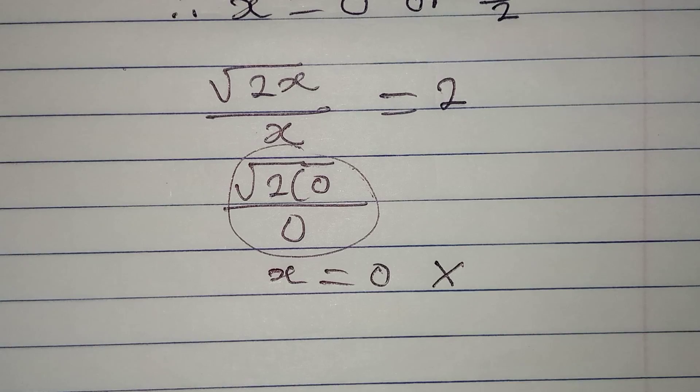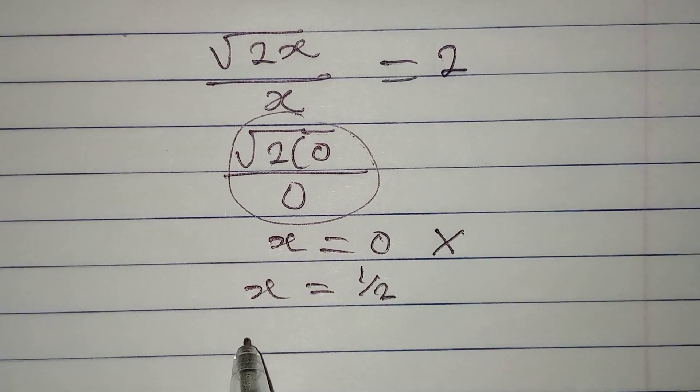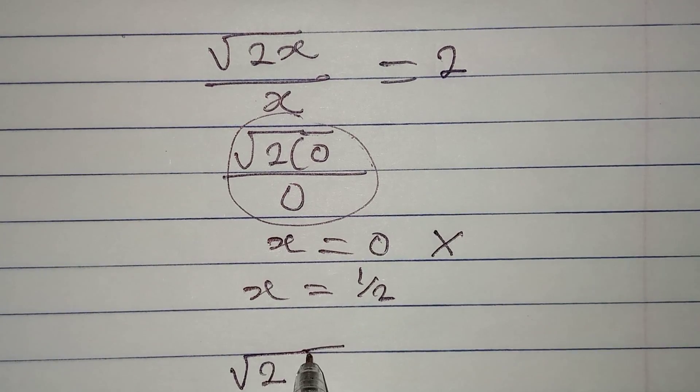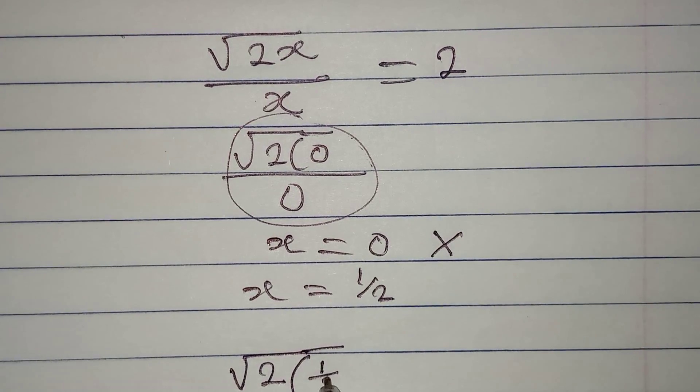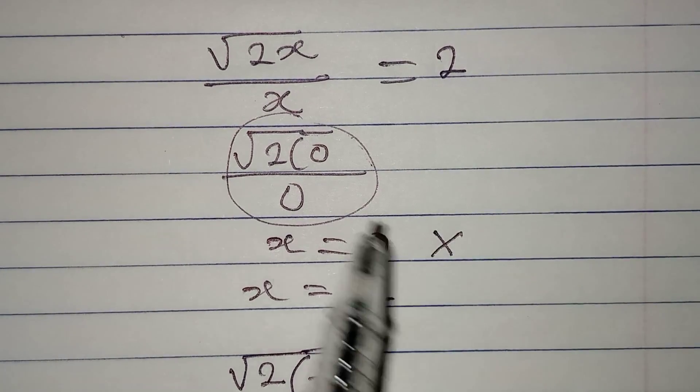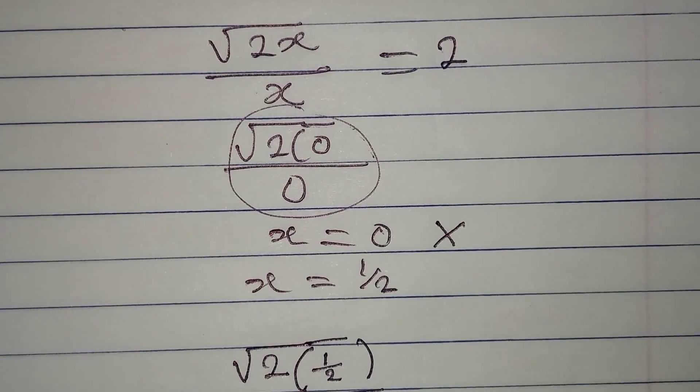Now let's try the second solution where x is equal to 1 over 2. So this means that we're going to have square root of 2, in place of x now I have 1 over 2, and the whole of this will be divided by x which is now 1 over 2. The question is, will this give us 2?